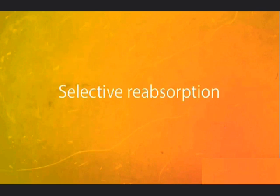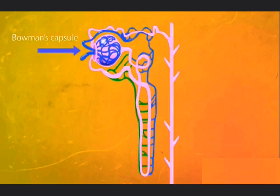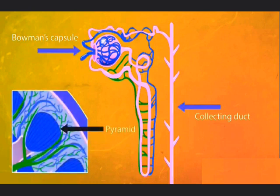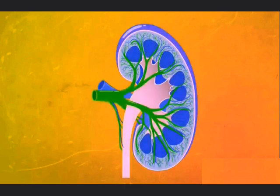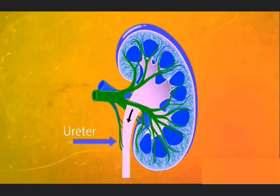However, the body does not want the urea, so it continues moving through the nephron and eventually reaches the collecting duct. The collecting duct takes waste down to an area of the kidney called the pyramid, where it collects waste from all the nephrons. Then it flows out of the kidney via the ureter to the bladder, where it is stored until the person gets that urge.